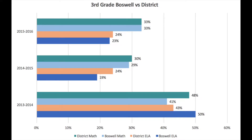Slides 6 through 8 show Boswell's performance on the state test compared to the district, with each chart covering a different grade level beginning with third grade. Math scores appear above English language arts scores for each year, with the most recent data at the top. This representation visually shows that Boswell typically scores better than the district in ELA, but not in math. Third grade scores show commensurate performance in math at 33% proficient and only a one percentage point difference in ELA.